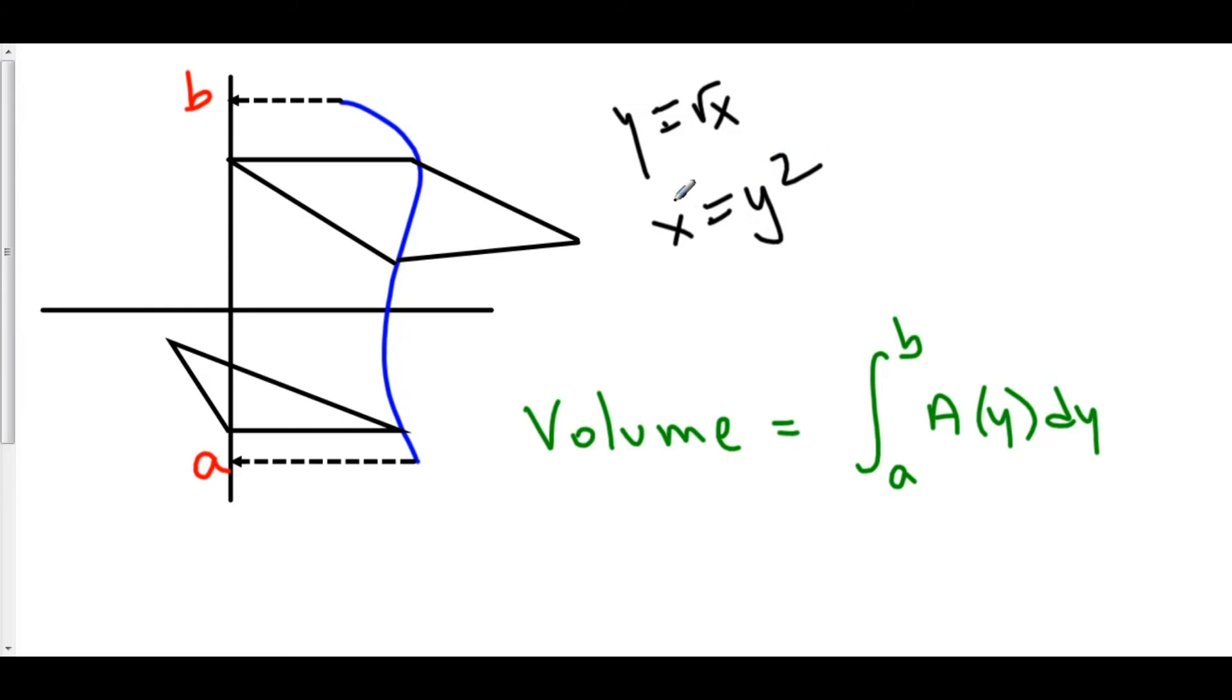But the point is that you are still taking an infinite sum, the integral from a to b, of the area of each of these cross sections. And that's the whole idea behind this. If you can find the area of the cross section in terms of your function, where your function is written in terms of the variable with respect to which you are integrating.